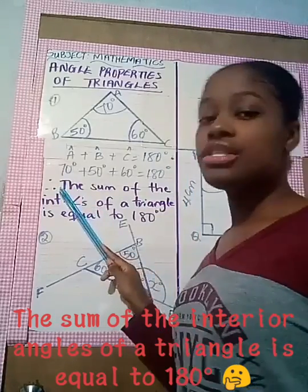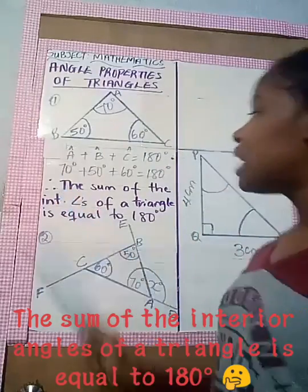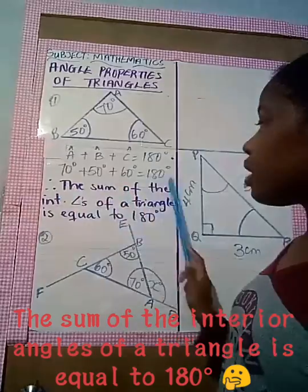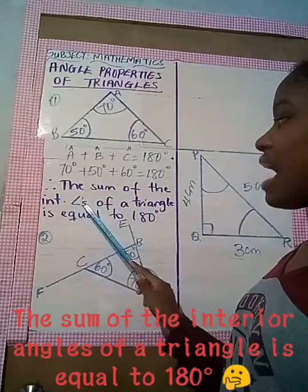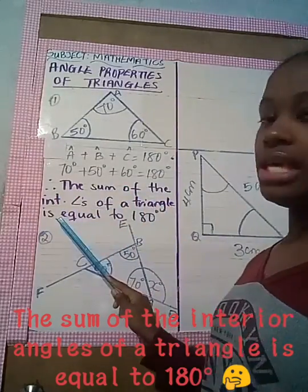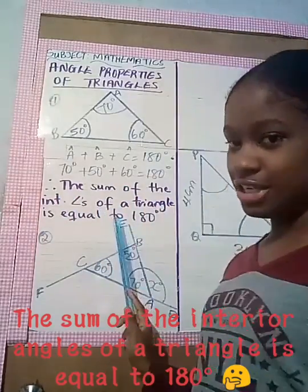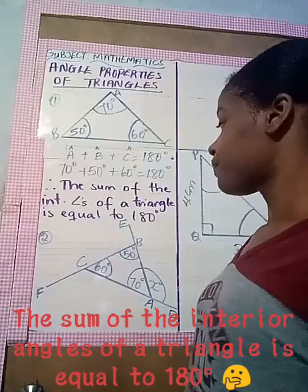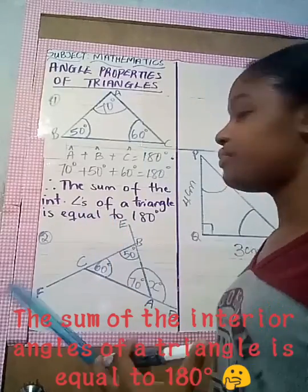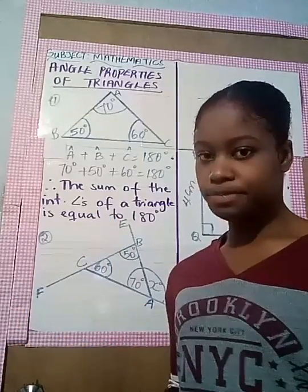Our first property states that the sum of the interior angles of a triangle is equal to 180 degrees. So that's the first property.